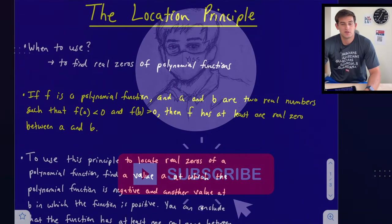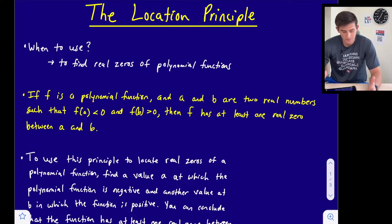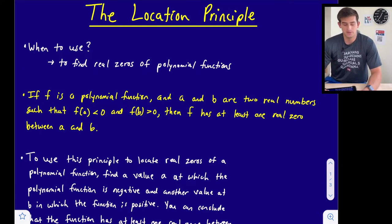Hello everyone, in this video we're going to talk about a principle known as the location principle. So when do we use this? We use this when we are trying to find real zeros of polynomial functions.